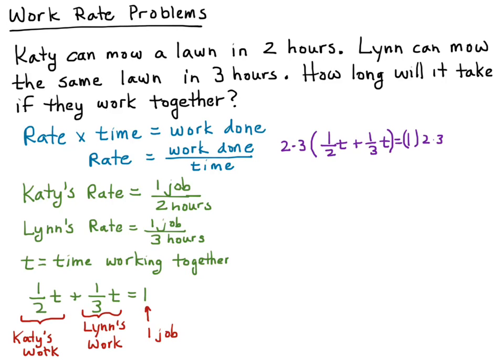One way we can do it is take both sides and multiply by the common denominator, which is 2 × 3. When we multiply 2 × 3 × 1/2, you get 3, so the first part of this equation is 3t. Then we take 2 × 3 × 1/3, and the threes cancel, so we get 2t.